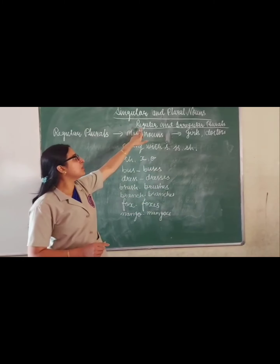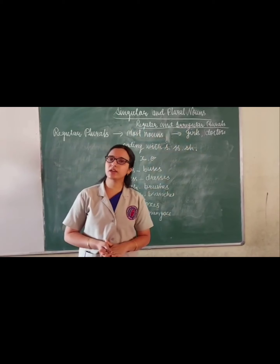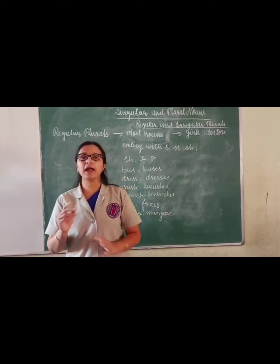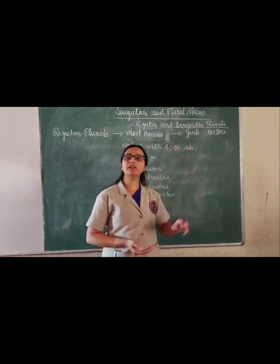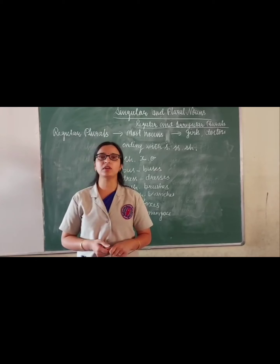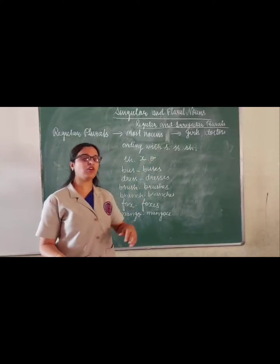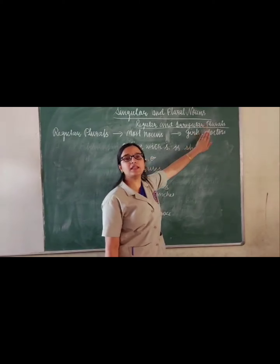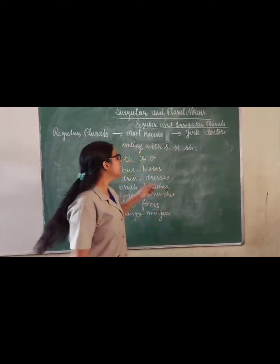Now here you can see regular and irregular plurals. There are two kinds of plural: regular plural and irregular plural. Regular plural means when we change a singular noun into plural noun by adding S or ES at the end without changing the spelling. Most nouns change into plural form by adding S at the end of the word. For example: girl becomes girls, doctor becomes doctors.